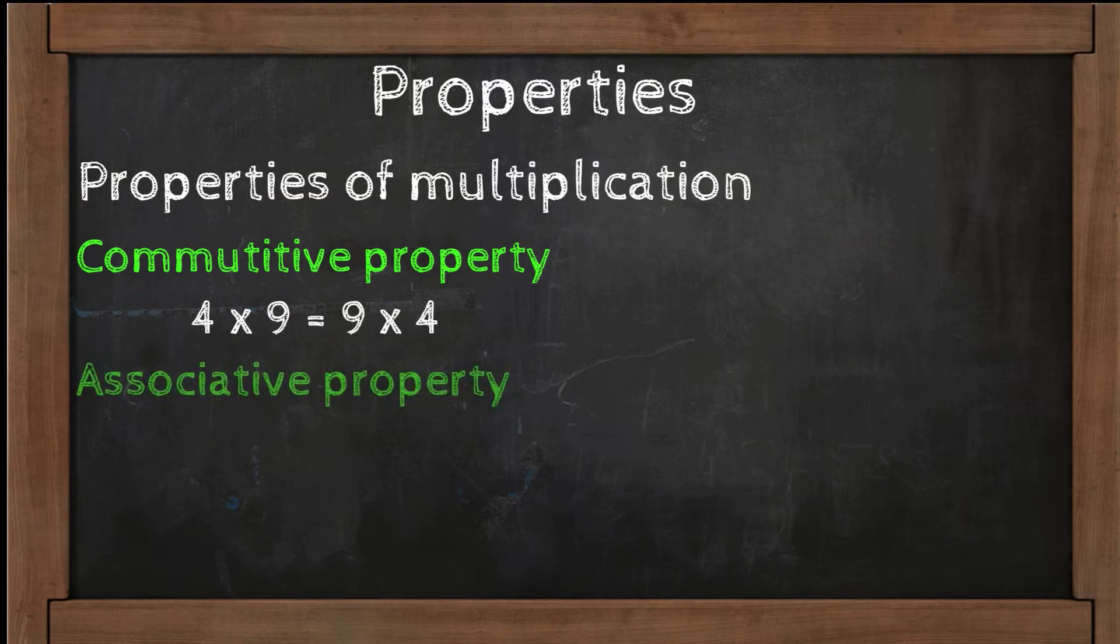Associative property: regroup the factors, product stays the same. 11 times the product of 3 times 6 equals the product of 11 times 3, then multiply by 6.